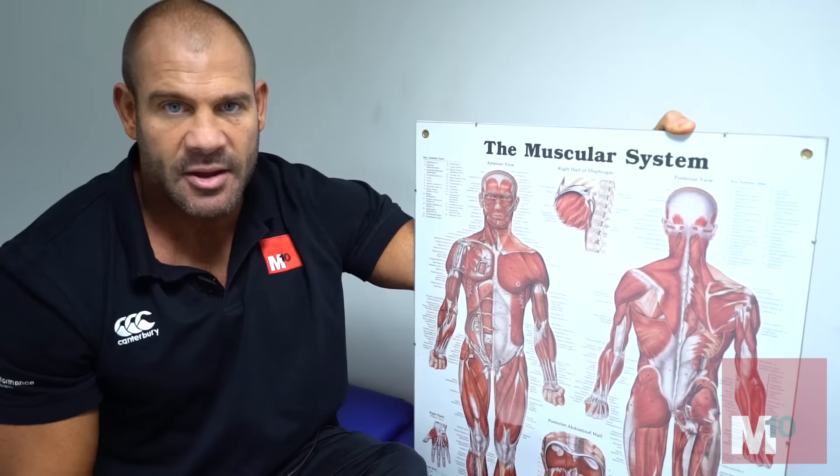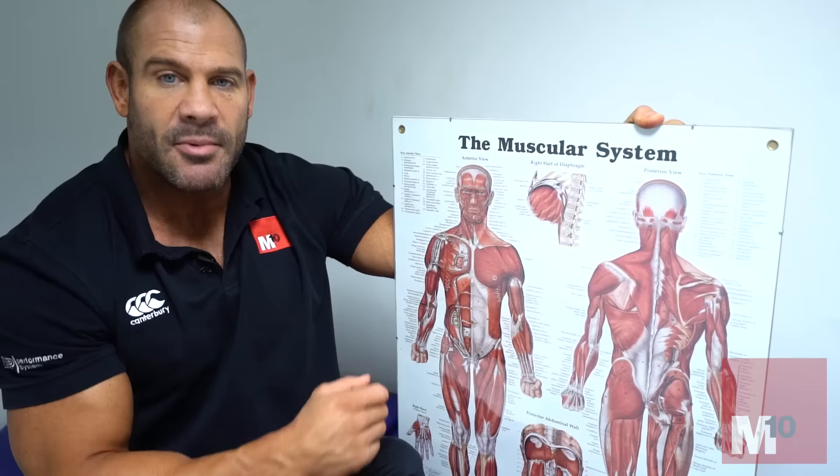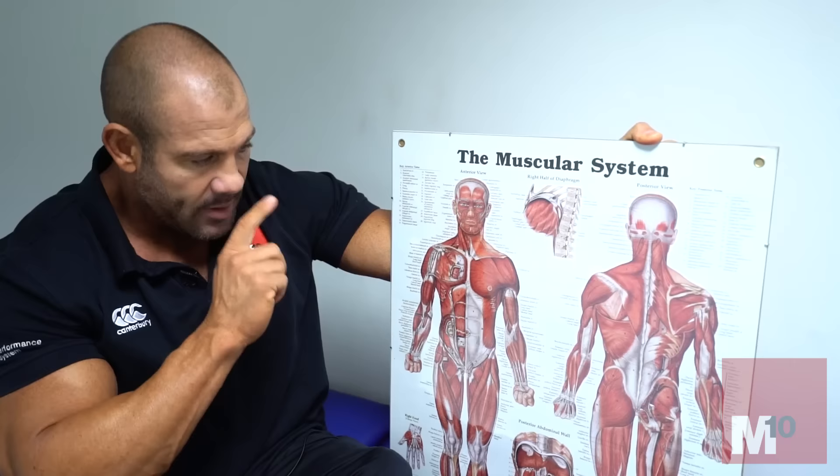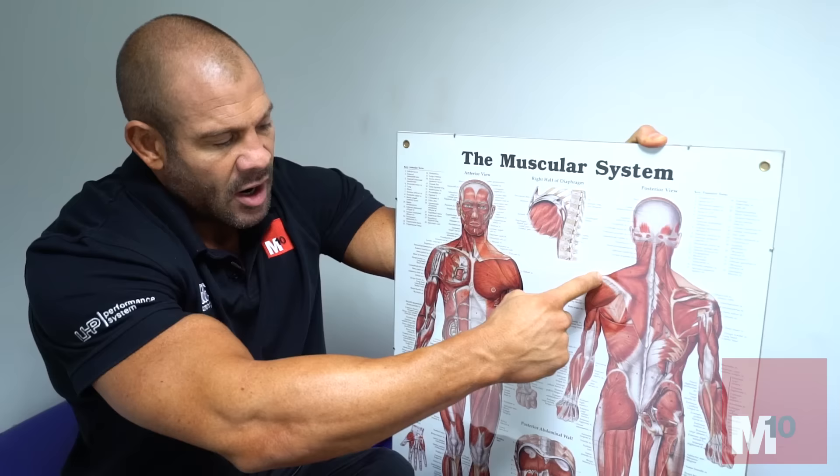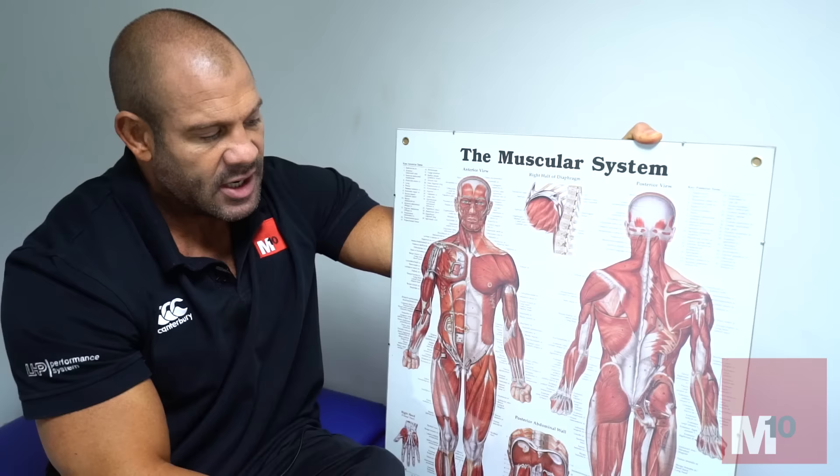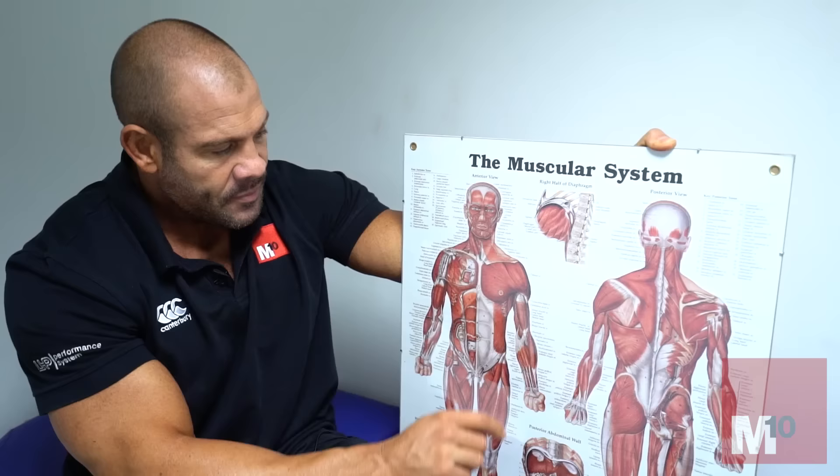The lateral delts are a very popular topic because any time I post about delts, people say they can't get them to grow. We're back at the muscular system so you can understand the anatomy. The attachment points for your lateral delts are very similar to the rear delts, inserting into the top of the humerus. The key movement is abduction.